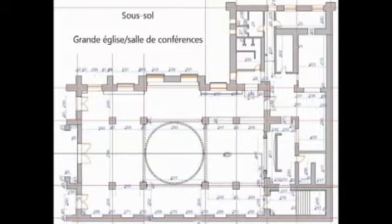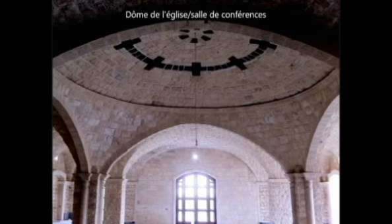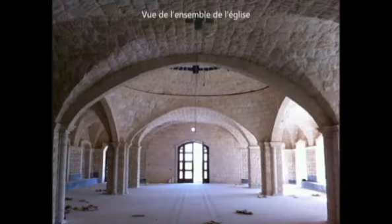Ici, nous voyons un détail du haut plafond de la porte d'entrée. L'église salle de conférence est faite en pierre brute. L'écho sous le dôme est majestueux. Cette église sera également et principalement employée pour rassembler le corps du Christ et organiser des séjours de retraite spirituelle.